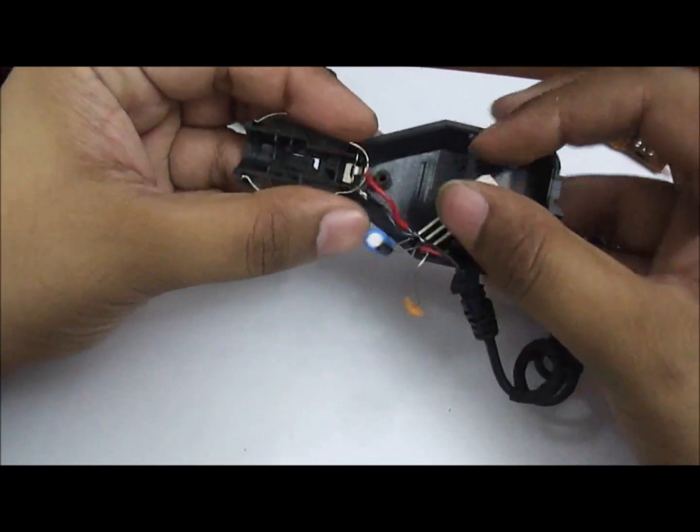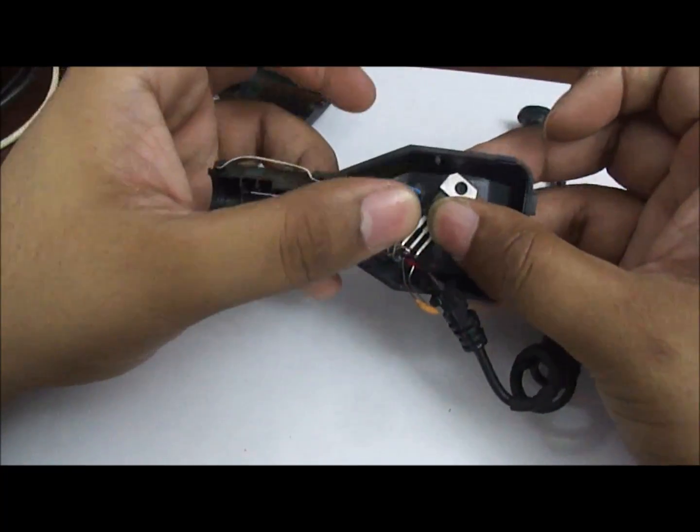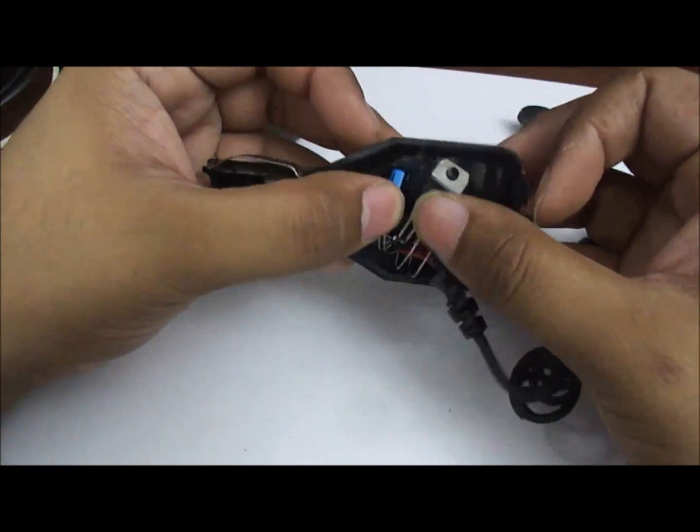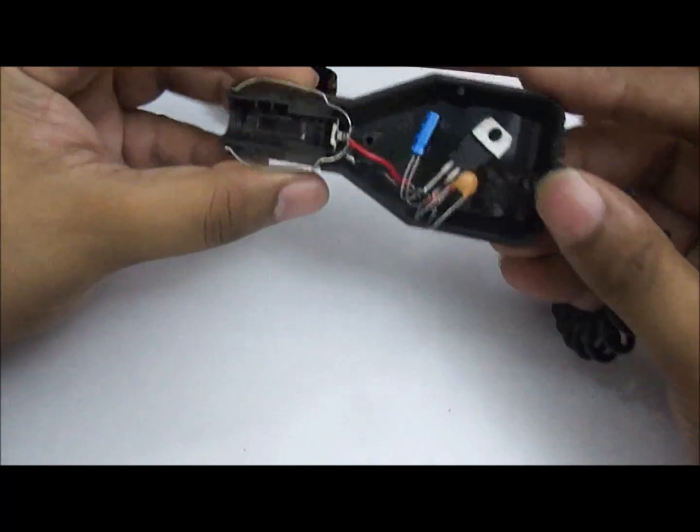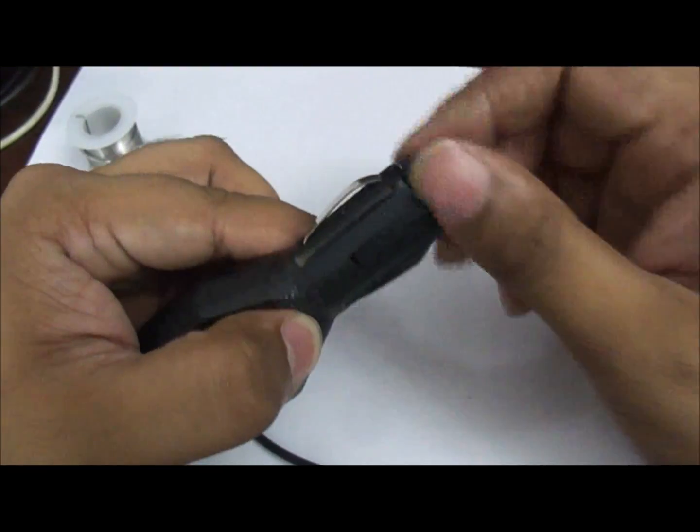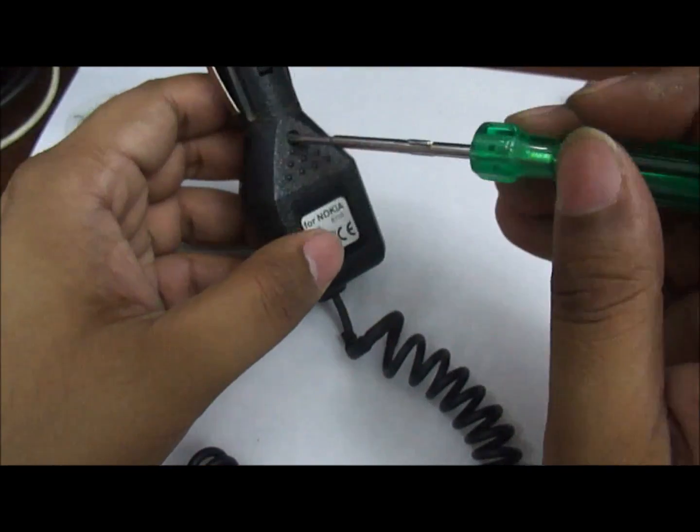Next we place all the components to fit inside the enclosure. We reassemble the charger back to how it was when we had started.